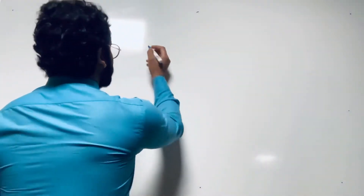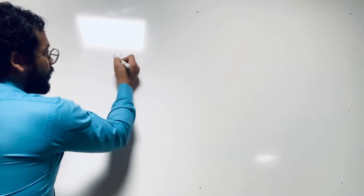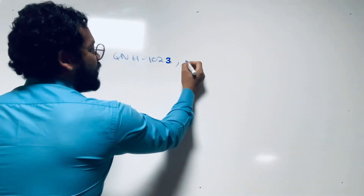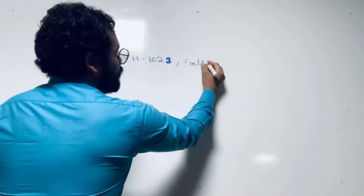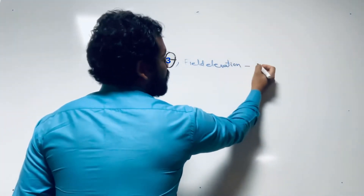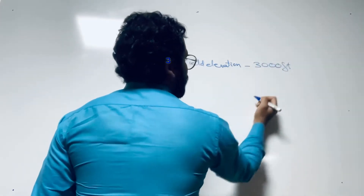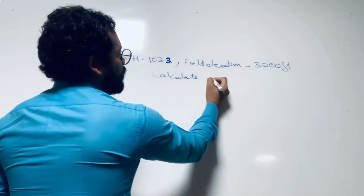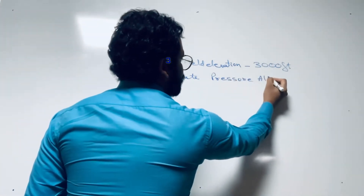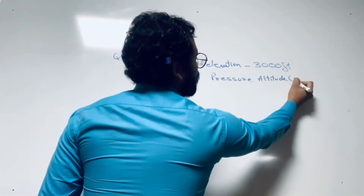Let's do a calculation. I hope that you will understand how to calculate the pressure altitude by the end of this topic. Let's take an example. Suppose there is a certain condition where the QNH is 1023 and field elevation is 3000 feet. In this case, calculate the pressure altitude (PA).